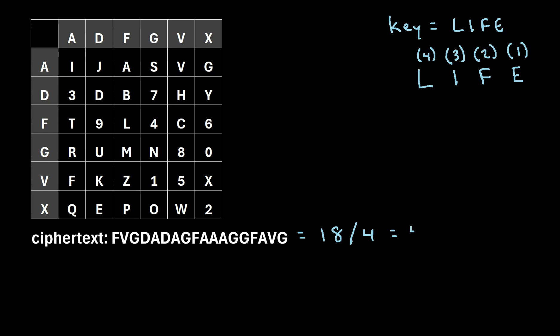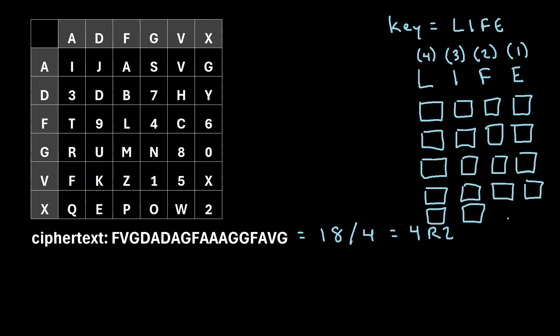If you do 18 divided by four, you'll get four with a remainder of two. So what that means is that this keyword grid right here is going to have four full rows and the last row is only going to have two characters in it. So we'll just note that these two positions right here in this keyword grid are not going to contain a character. So we need to keep that in mind.